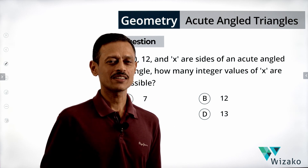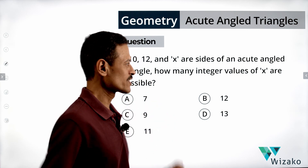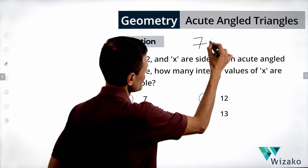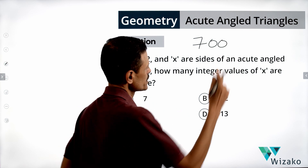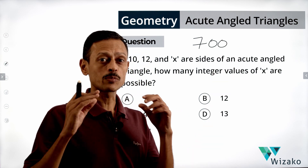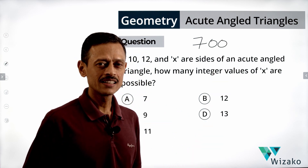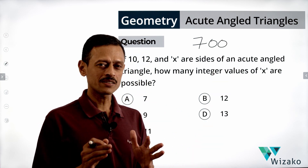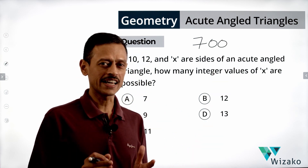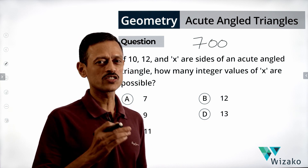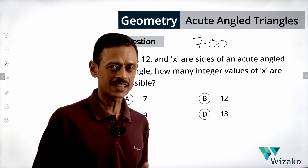This is a very interesting question. I'll classify this as a GMAT 700 level problem solving question from Geometry. The concept tested is properties of triangles, specifically focusing on properties of acute angle triangles.